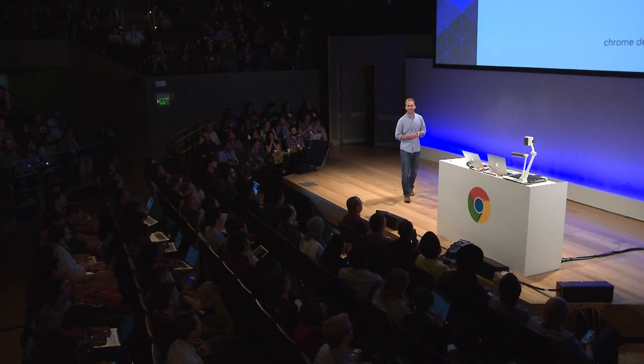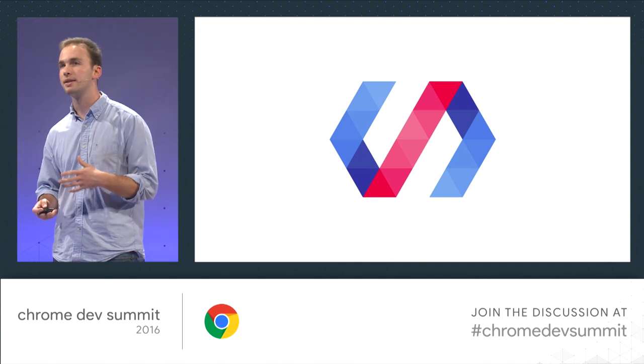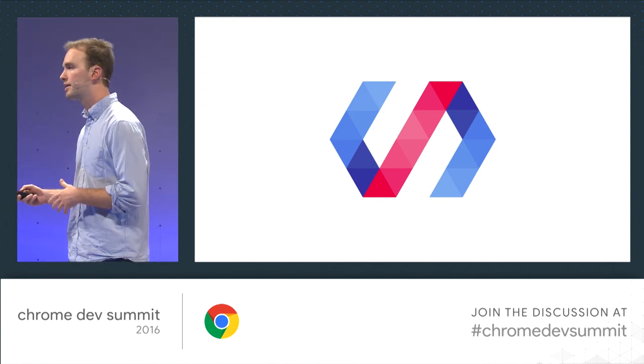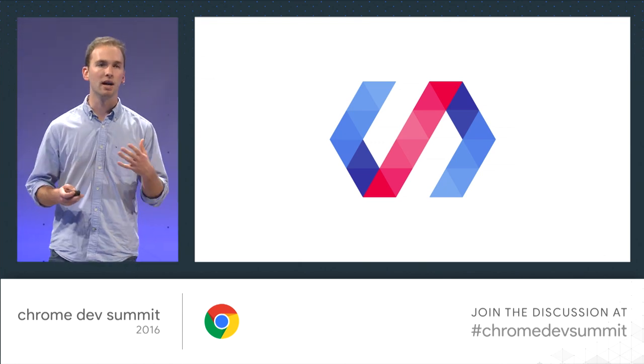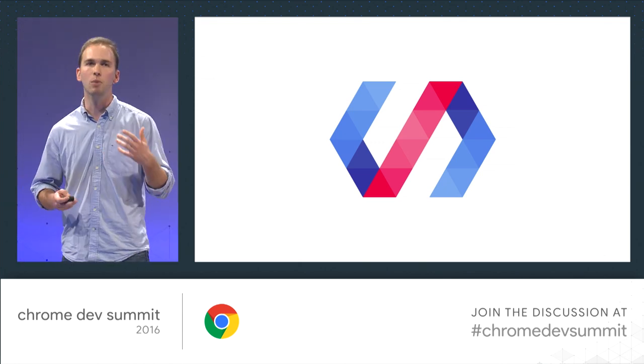My name is Taylor Savage. I'm a product manager here on Chrome on the Polymer project. I'm here with Monica, who's an engineer on the Polymer project as well, to tell you all things Polymer. I'll start off by talking about where we are with the project overall, and how web components are really changing how we do web development. Then Monica will go into technical details around how to take best advantage of Polymer and web components to build a great high quality modern mobile progressive web app.